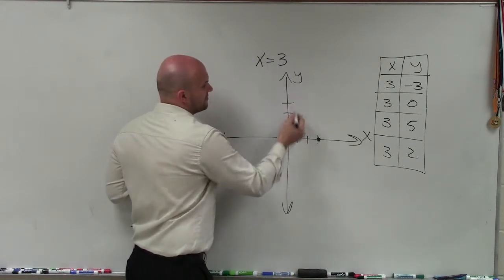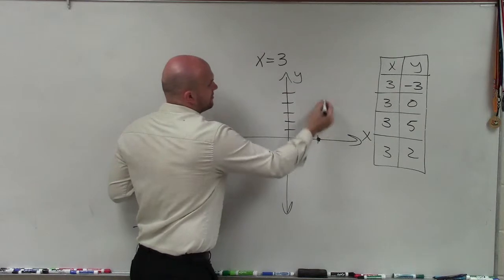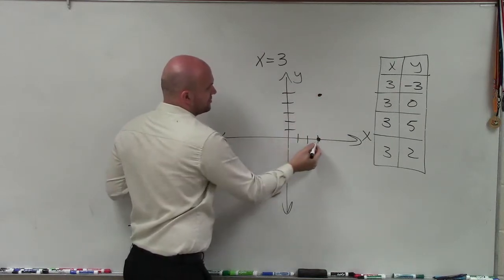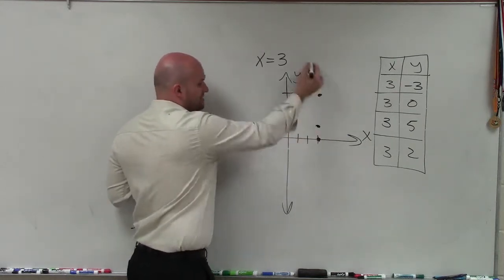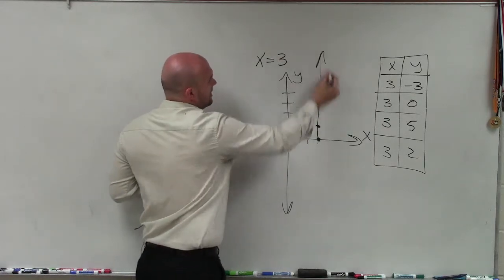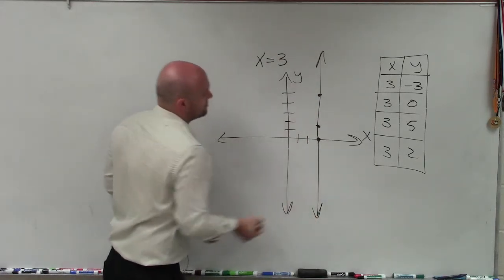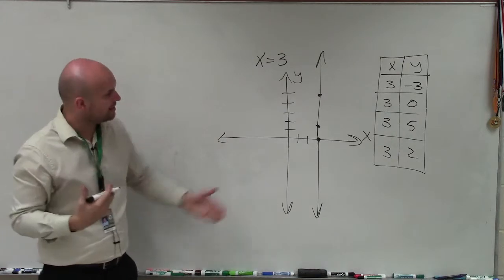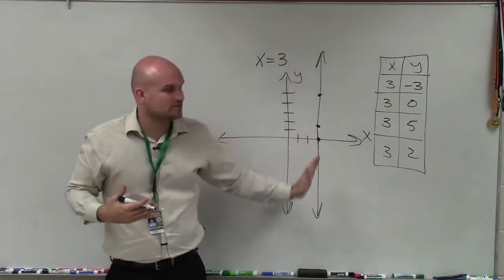Where's 3, 5? 3, 2. It's up here. All these points are always going to be on what we call this vertical line. So whenever x is equal to a value, you're going to have a vertical line where the x value will always remain the same.